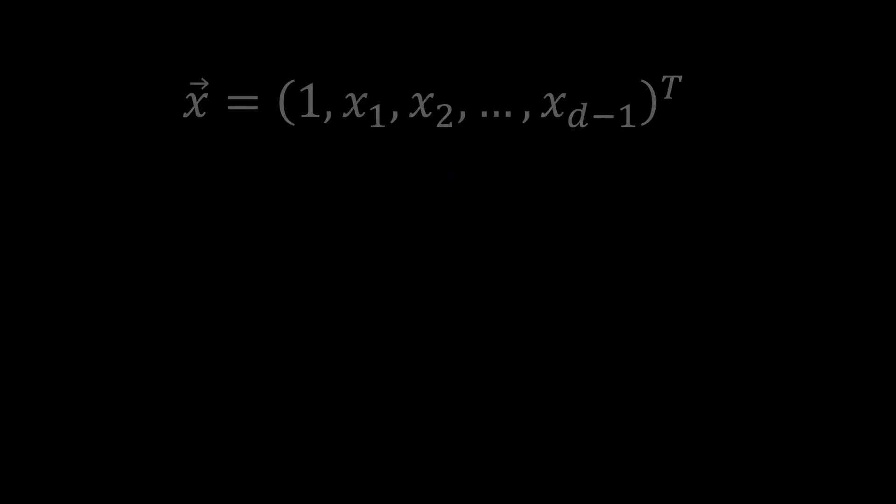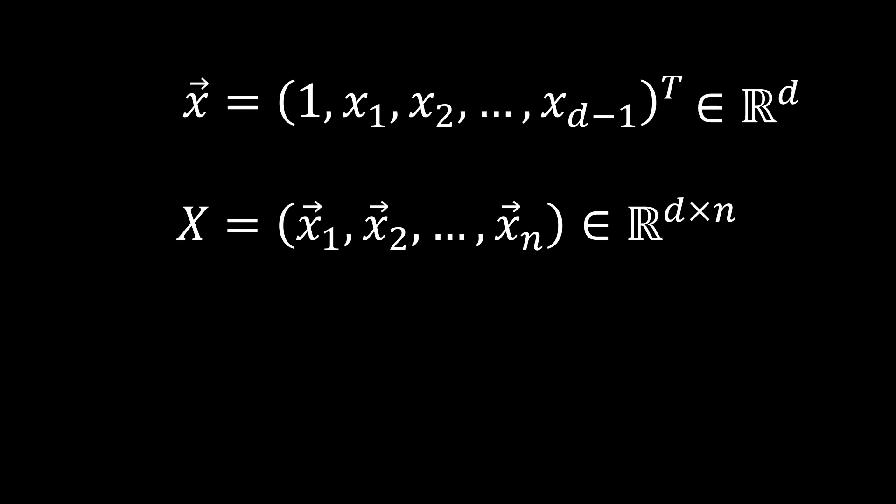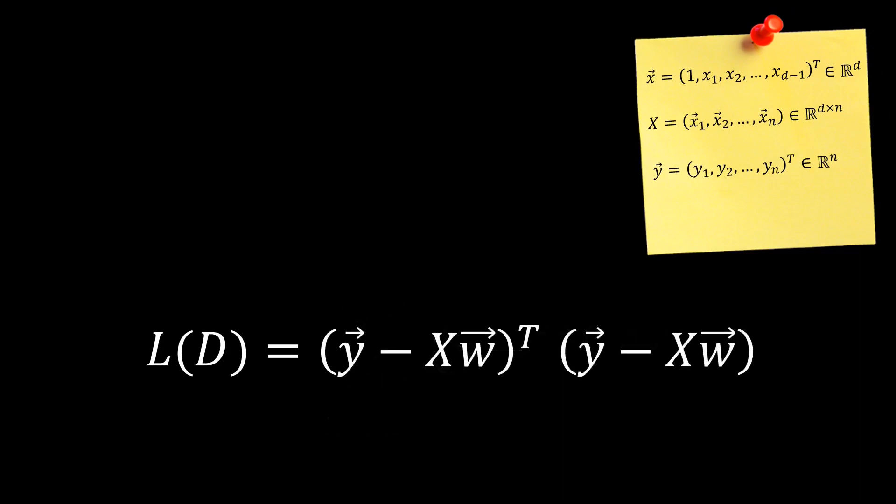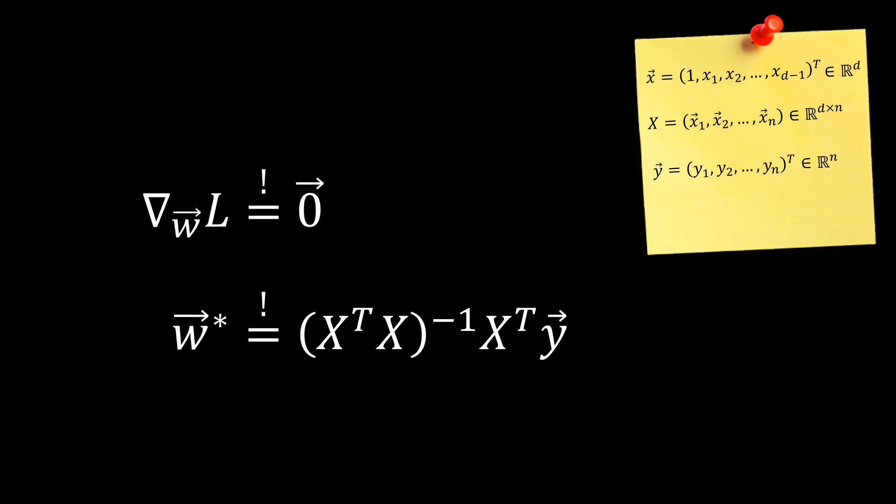If we take the vector representation of our inputs and stack all input vectors in our dataset together, we can represent all inputs in our dataset by a single matrix X. This is also known as the design matrix of the regression problem. Similarly, we can take the N scalar outputs Y in our dataset and stack them into an output vector. Taking these shorthand notations, we can use linear algebra notation and represent our loss function in a compact matrix vector notation. With a similar deduction as before, we can find that the optimal set of weights are given by this formula. Note that any framework that allows for matrix operations can be used to directly translate this formula into code, such that we can calculate the OLS weights for any dataset.